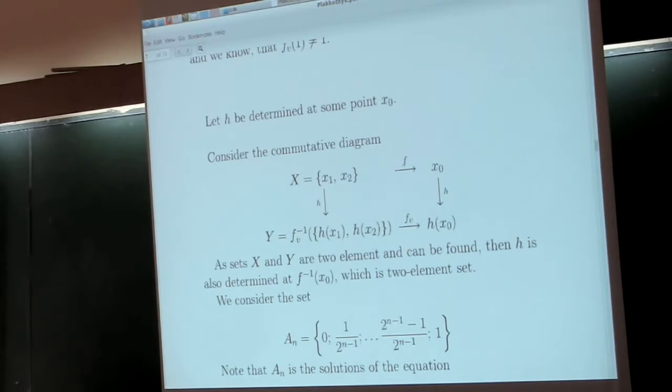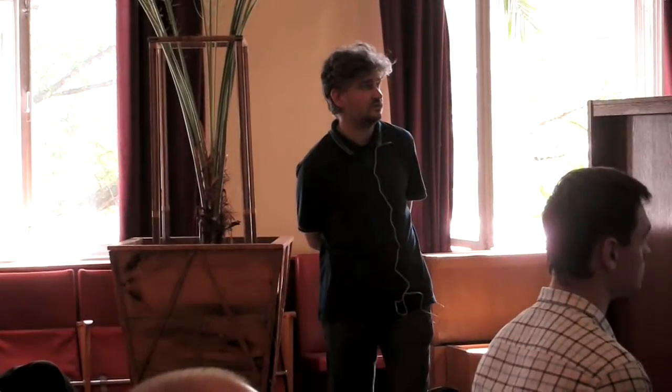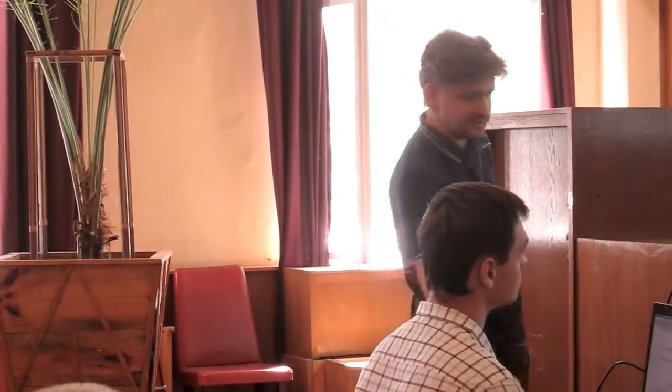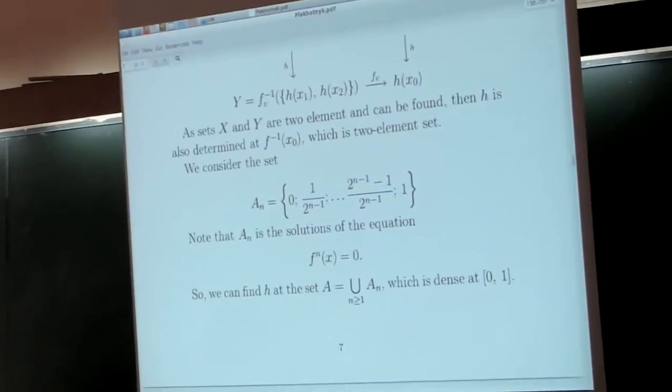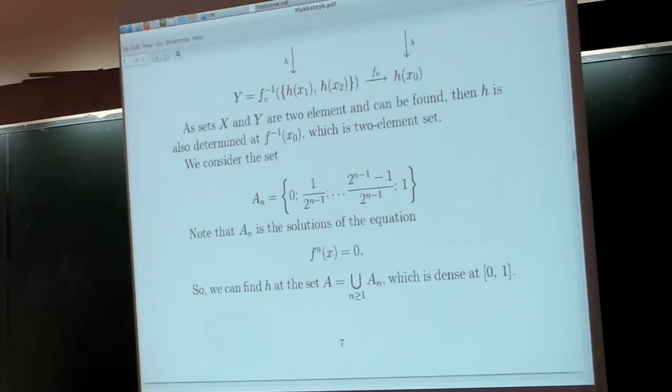We show that H(0) = 0, which means H increases. This commutative diagram should be understandable. F increases then decreases, so we can find two points which go to x0 under F. We know H at x0, then we get two pre-images of H(x0) under G. Since H increases, we get H at x1 and x2, which are pre-images of x0.